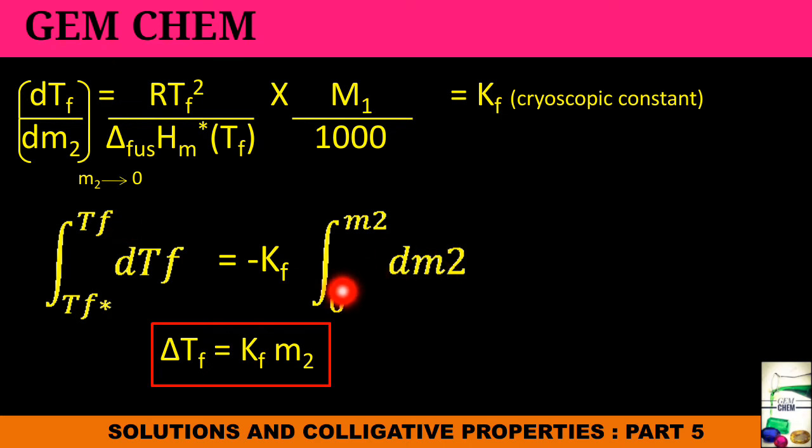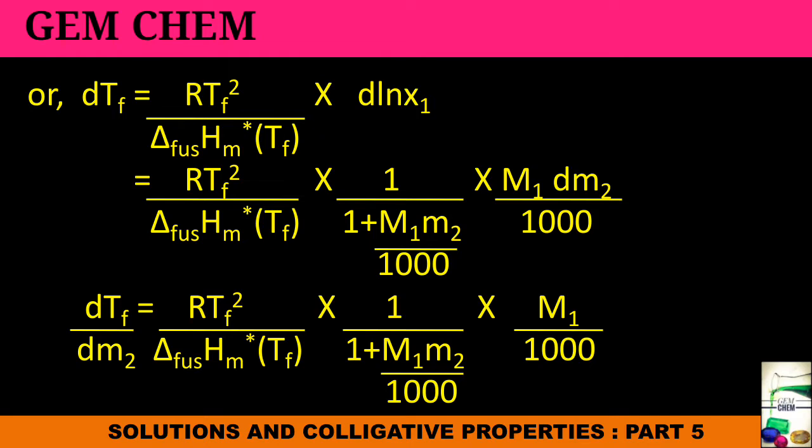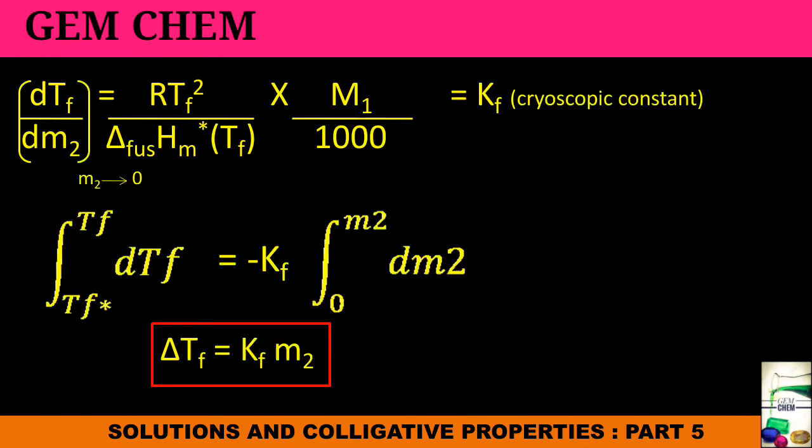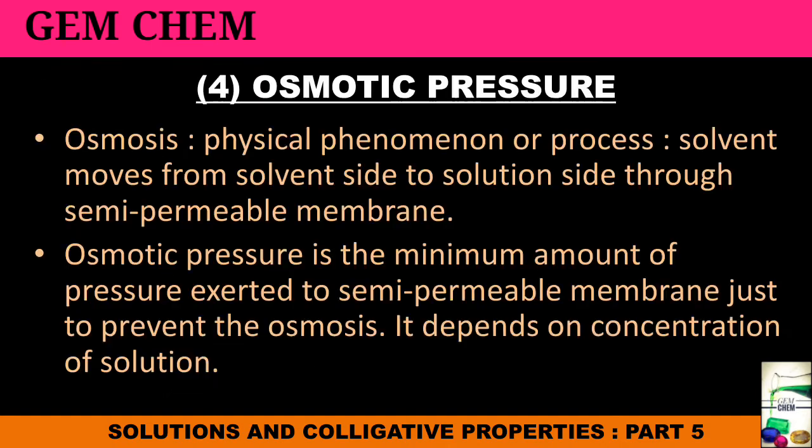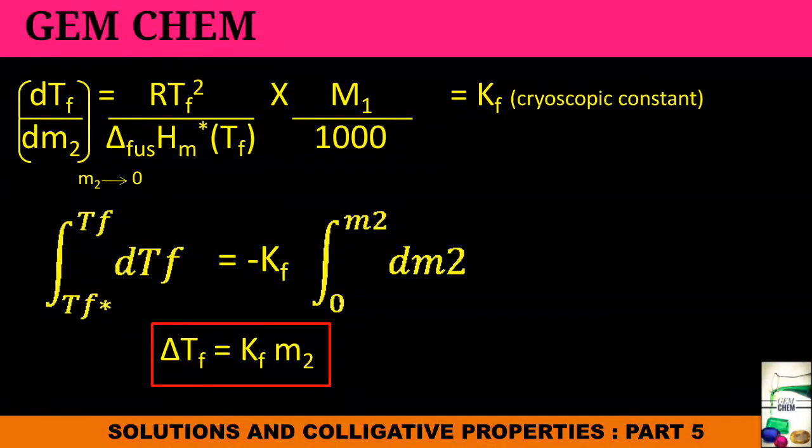Now we have to integrate this expression from TF star to TF and from 0 to M2. On differentiating we had obtained this expression, and on further integration what we obtain is Delta TF equals to KF M2. We know that KF is our derived constant which is being required for this. If we want to understand what is KF, KF is cryoscopic constant and this equation is particularly valid for all ideal and ideally dilute solution. Solute is insoluble in solid solvent and solute is a non-electrolyte.